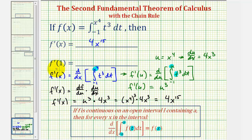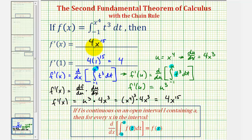To find f prime of one, we'll substitute one for x. Of course one to the fifteenth is just one, so we have four times one, or four. So while we are done, let's go ahead and check this by integrating to find f of x and then differentiating to check f prime of x. Let's do this on the next slide.